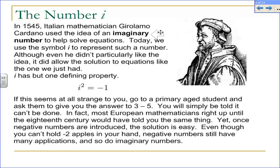The term imaginary number was first given to these numbers by René Descartes — you might know him as the "I think therefore I am" guy. He was actually using it in a derogatory way, because these numbers had been talked about on the outskirts of mathematics for centuries and nobody particularly liked the idea. But it was an Italian mathematician in 1545 by the name of Cardano who ended up using this in a practical way. He was solving equations not too dissimilar from the one we just had, and he recognized he could solve them using imaginary numbers as an intermediate step.